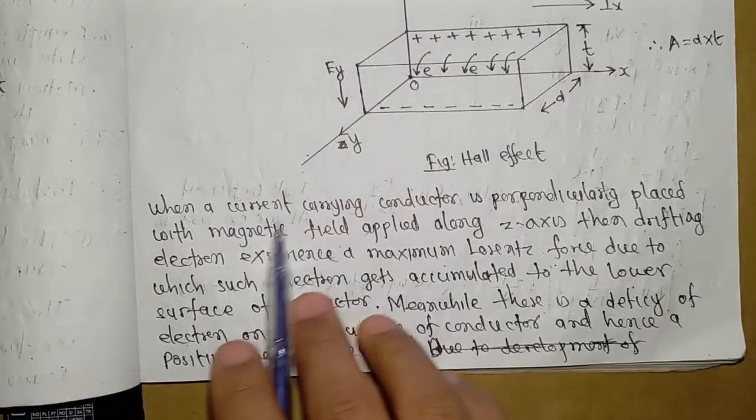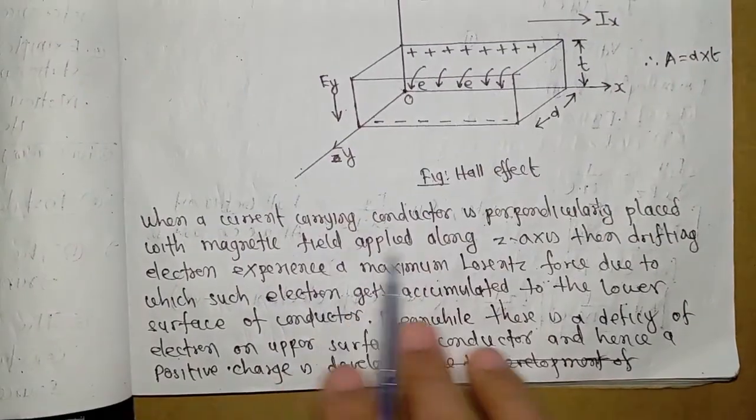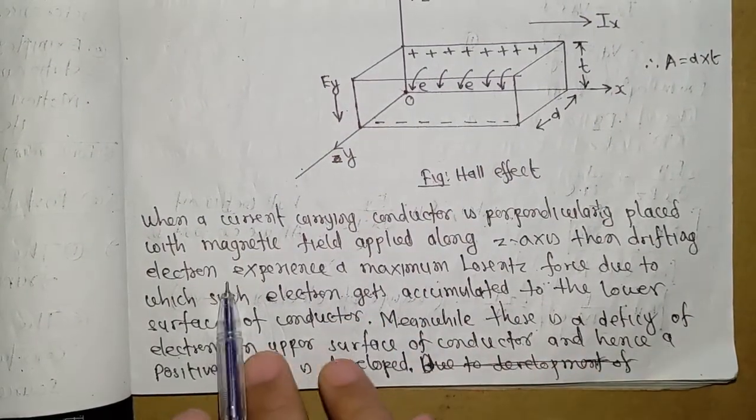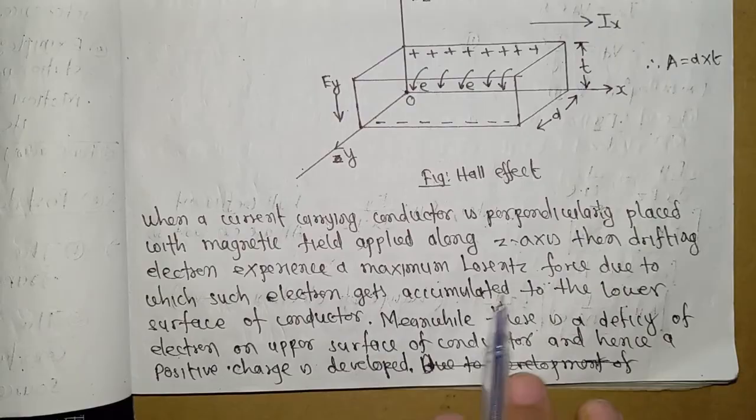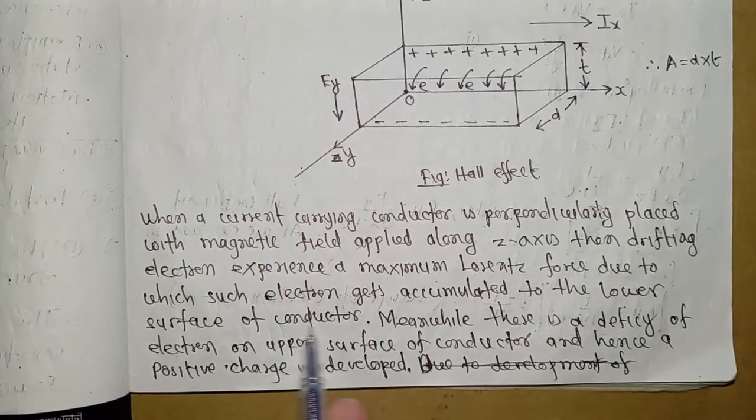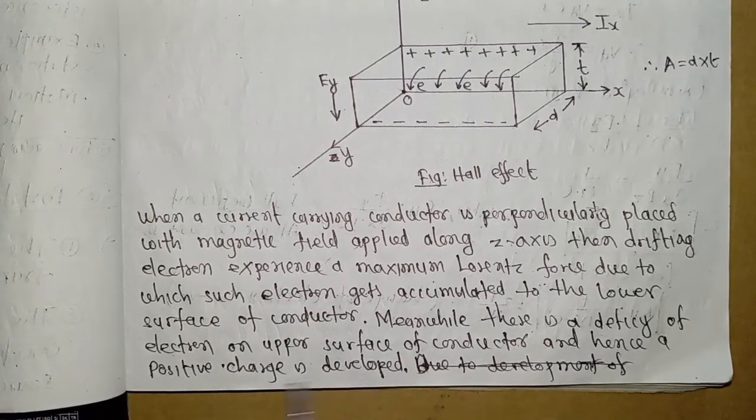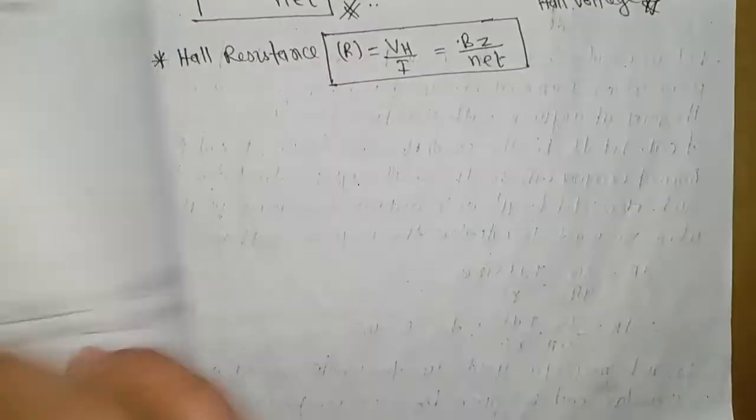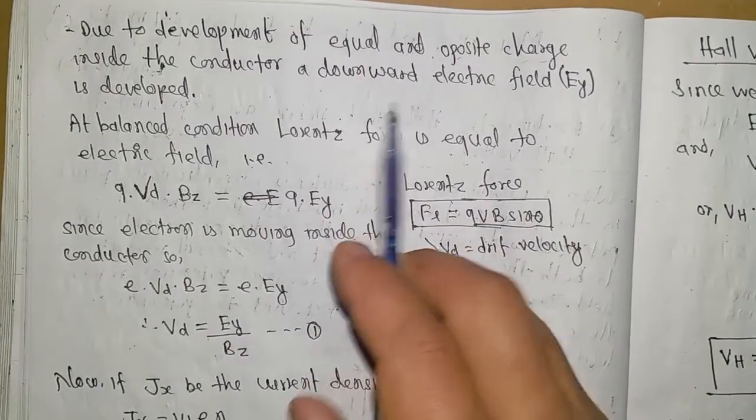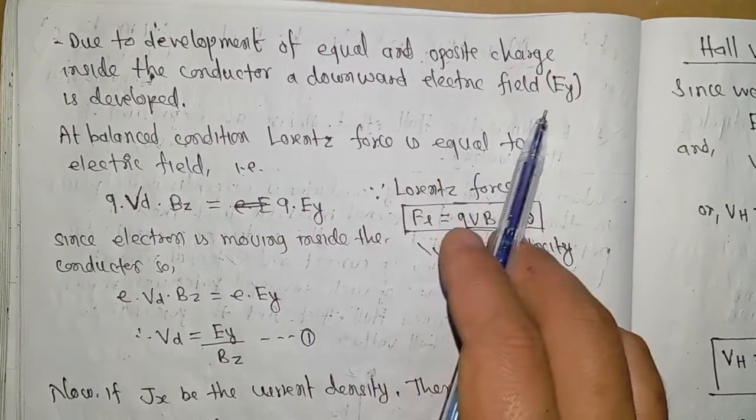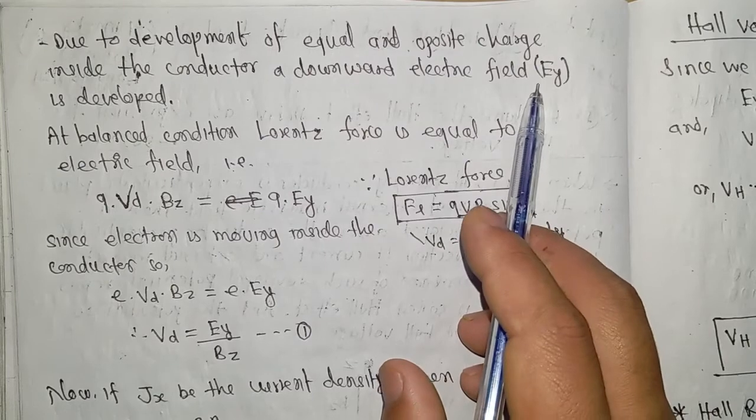Assume a current carrying conductor is placed with magnetic field applied along the z-axis. The drifting electrons experience maximum Lorentz force, due to which electrons get accumulated at the lower surface. Meanwhile, there is deficiency of electrons on the upper surface, and hence positive charge is developed. Due to development of equal and opposite charges inside the conductor, a downward electric field EY is developed.